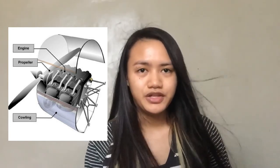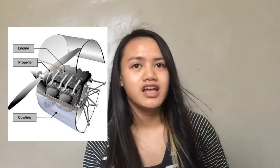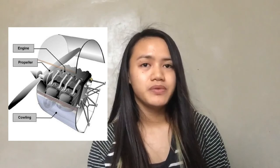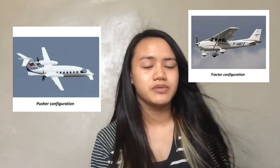The fifth and last component is the power plant, which usually includes both the engine and the propeller. The primary function of the engine is to provide the power to turn the propeller. The engine is covered by a cowling or nacelle, which are types of cover housings. Their purpose is to streamline the flow of air around the engine and to help cool the engine by ducting air around the cylinders. The propeller, mounted on the front of the engine, translates the rotating forces of the engine into thrust — a forward-acting force that helps move the airplane through the air. The propeller may also be mounted on the rear of the engine, as in a pusher-type aircraft.